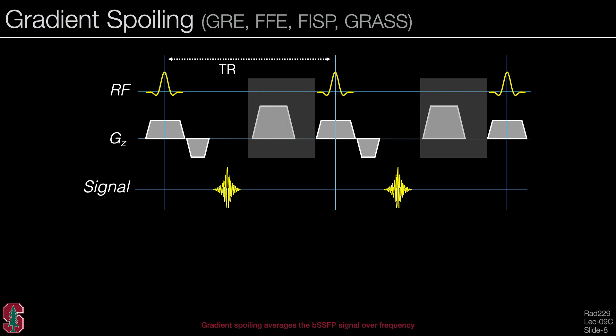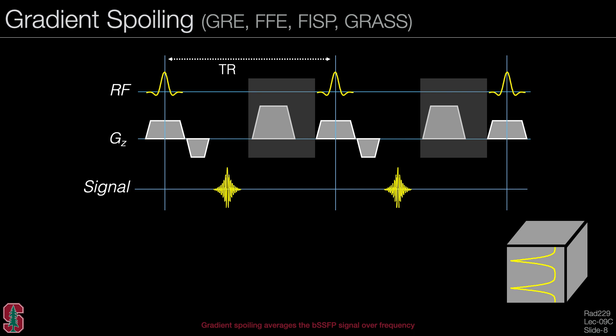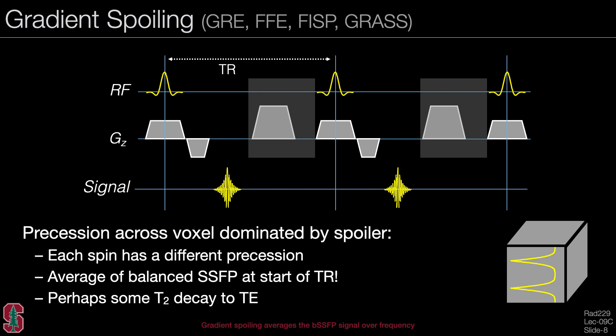Looking at the sequence again plotted with the slice selection gradient and the signal, within a voxel we have different amounts of induced precession. It looks like we have taken the balanced SSFP signal and compressed it within a voxel. So the signal in the sequence is the average of the balanced SSFP signal at the start of the TR, because we sample the signal prior to the induced precession, with some T2 or T2* decay from the RF pulse to the echo time.